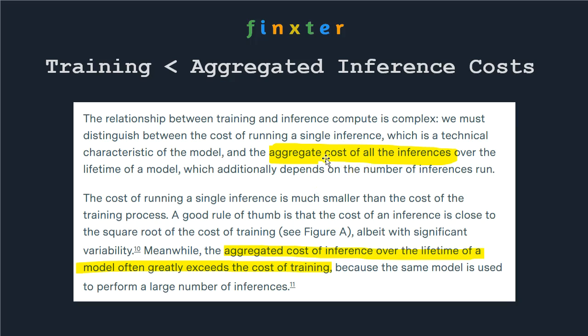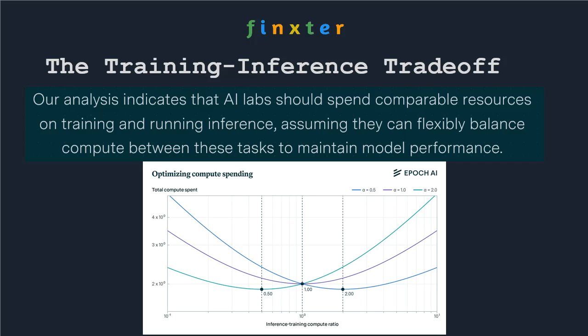If we have the aggregate cost of all inferences, we might find out that this, over the lifetime of the model, will often greatly exceed the cost of training. For example, with the GPT model, you have a lot of training cost, but then you might have 100 million users running inference on this model. You train it once, but have millions of operations — so in aggregate, even though a single inference is many orders of magnitude cheaper, the aggregate cost can be enormous.